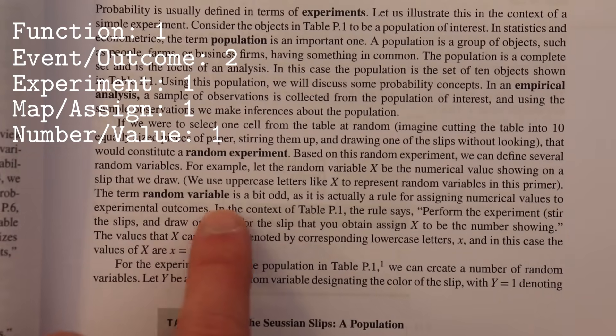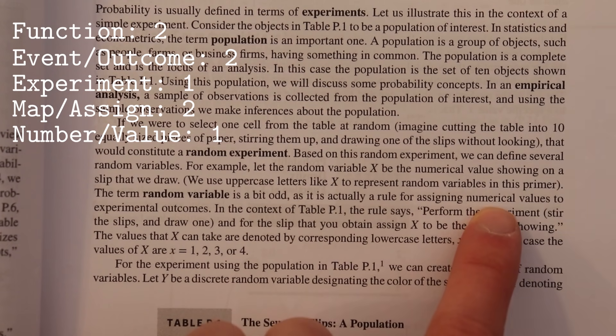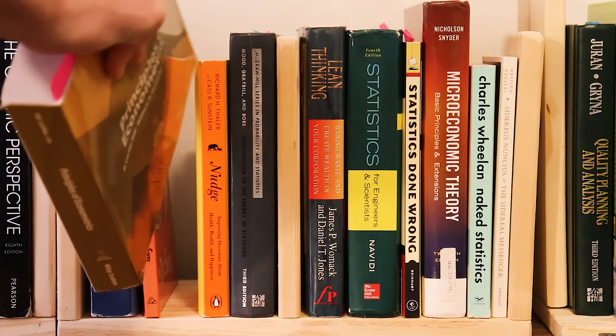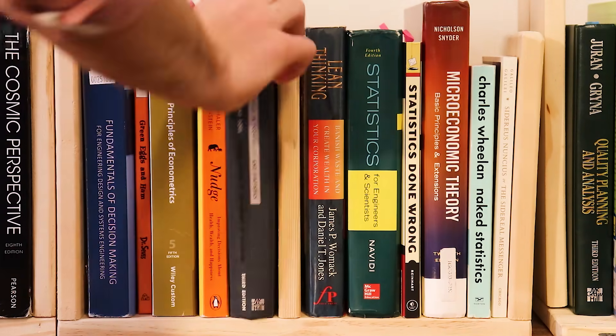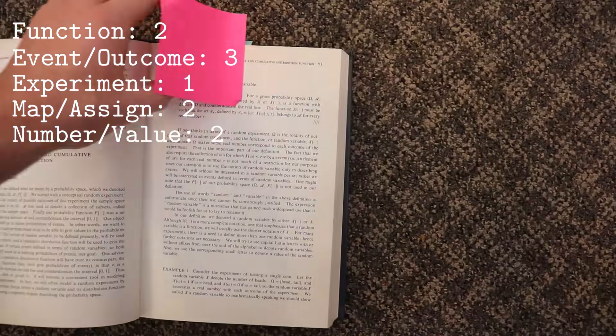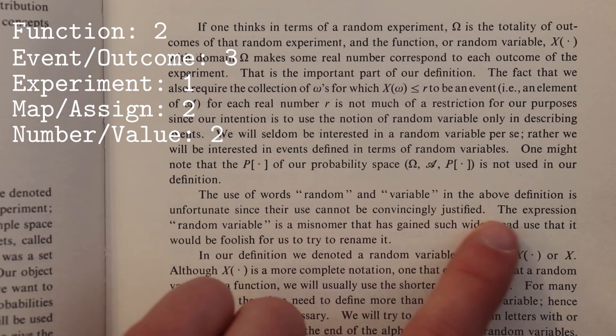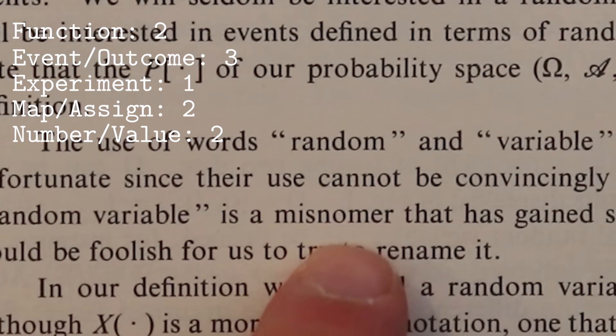The term is a bit odd. This is actually a rule for assigning values to outcomes. The use of the word random and variable is unfortunate because their use cannot be justified. The term random variable is a misnomer.